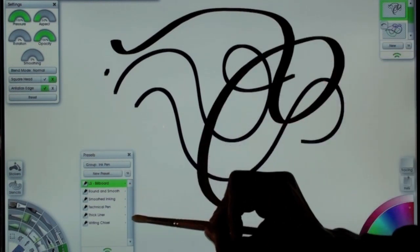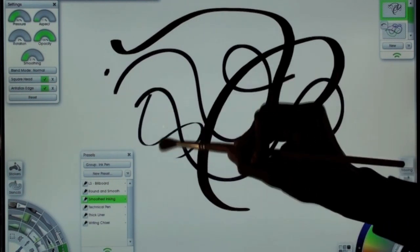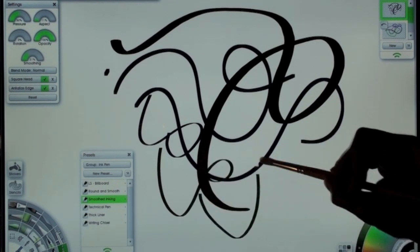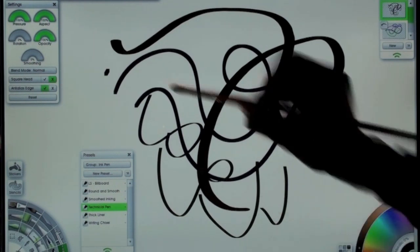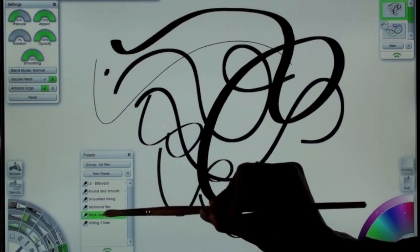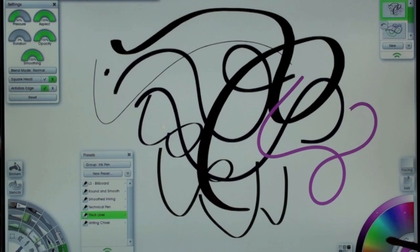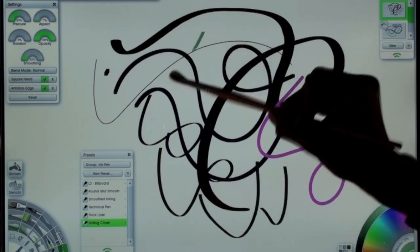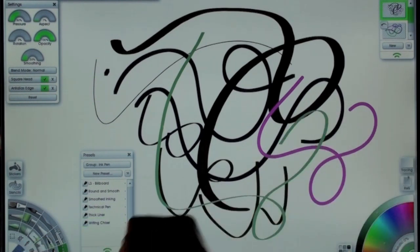That's the billboard tool. Here's smooth inking, the technical pen, the thick liner, and finally the writing chisel. As with all the tools, I can adjust the size.